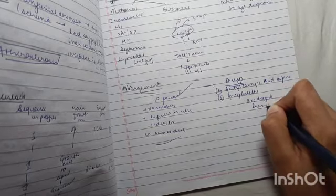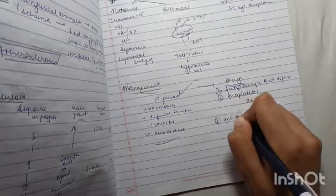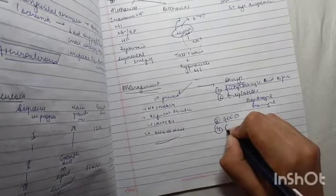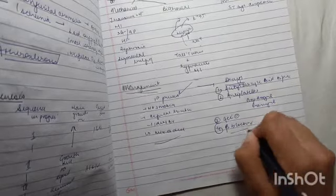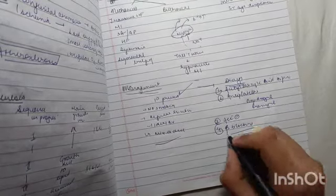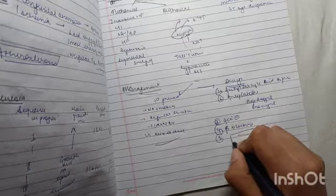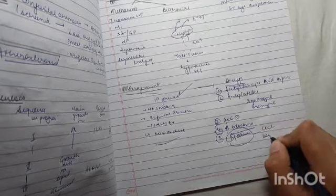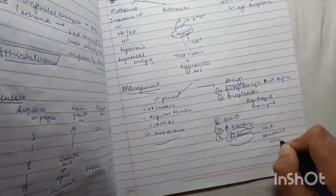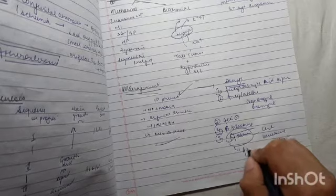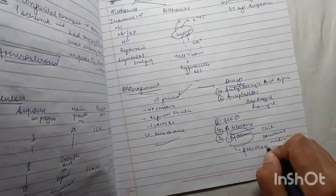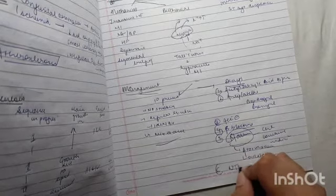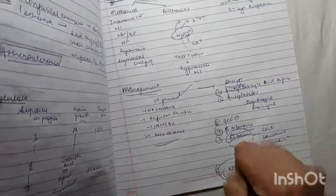ACE inhibitors like enalapril and captopril, cardioselective beta blockers like metoprolol and carvedilol, statins which are cholesterol-lowering medications like atorvastatin and lovastatin, and nitroglycerin which is very important for angina pectoris.